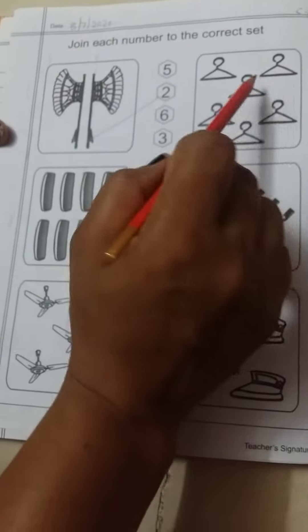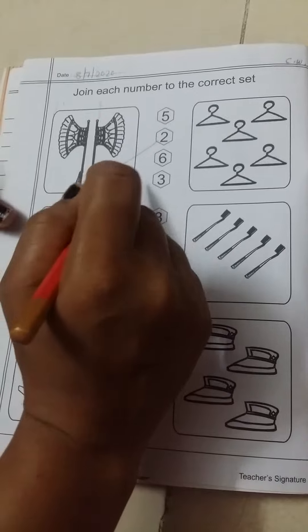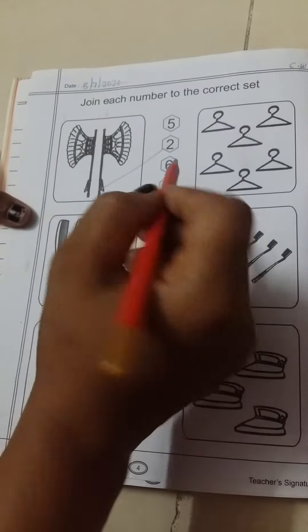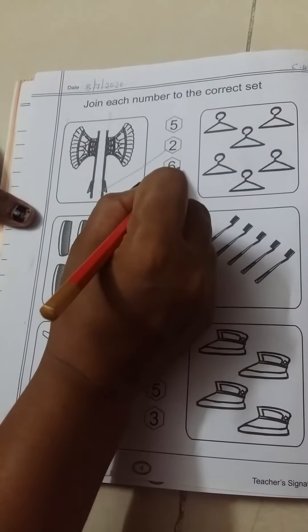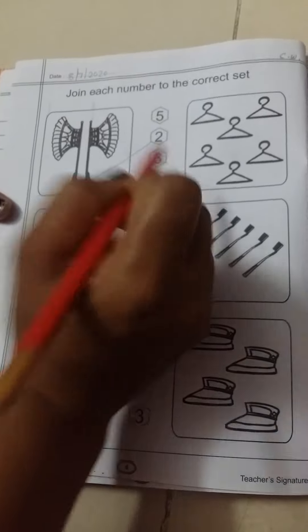One, two, three, four, five, six. We have six objects. We will match the number six. Next.